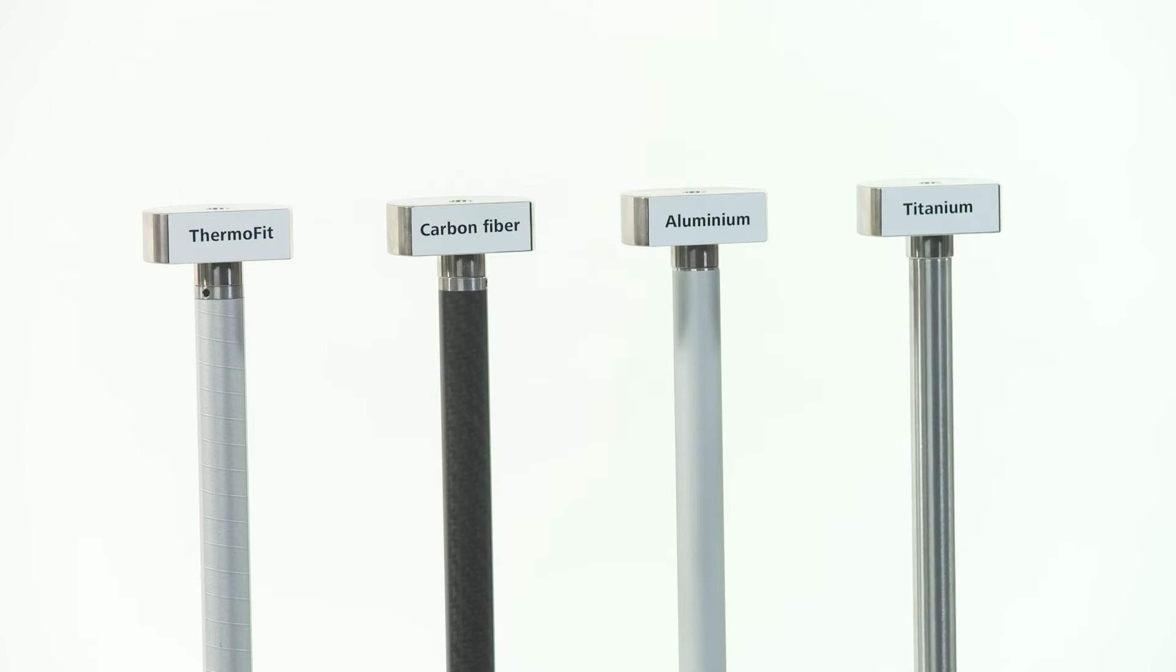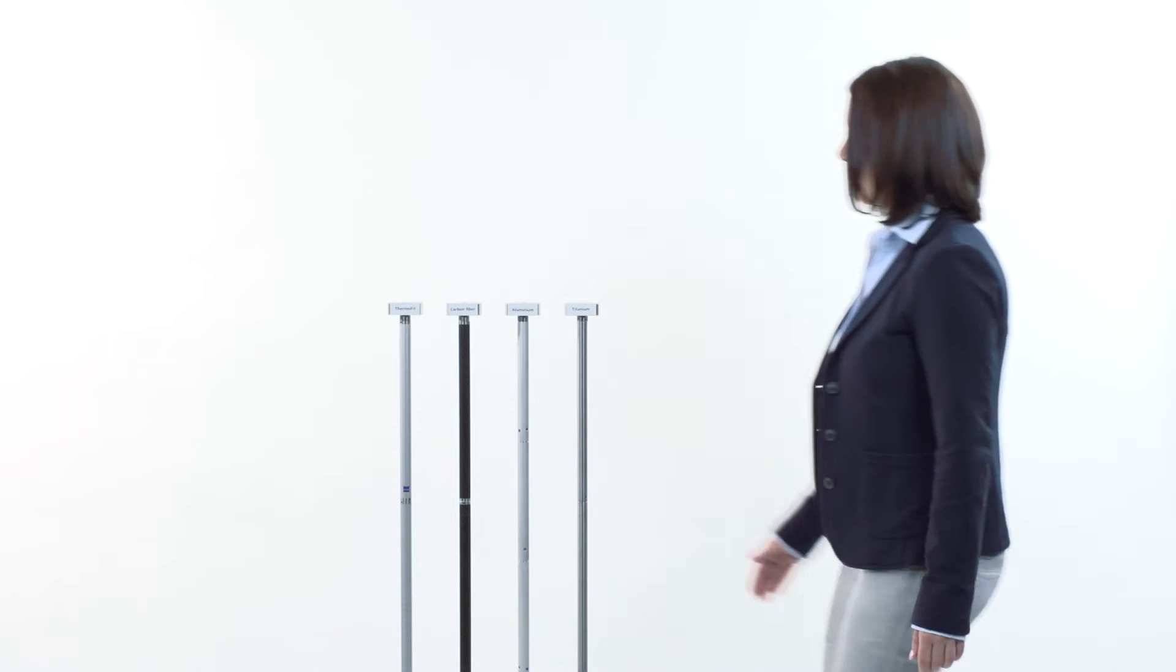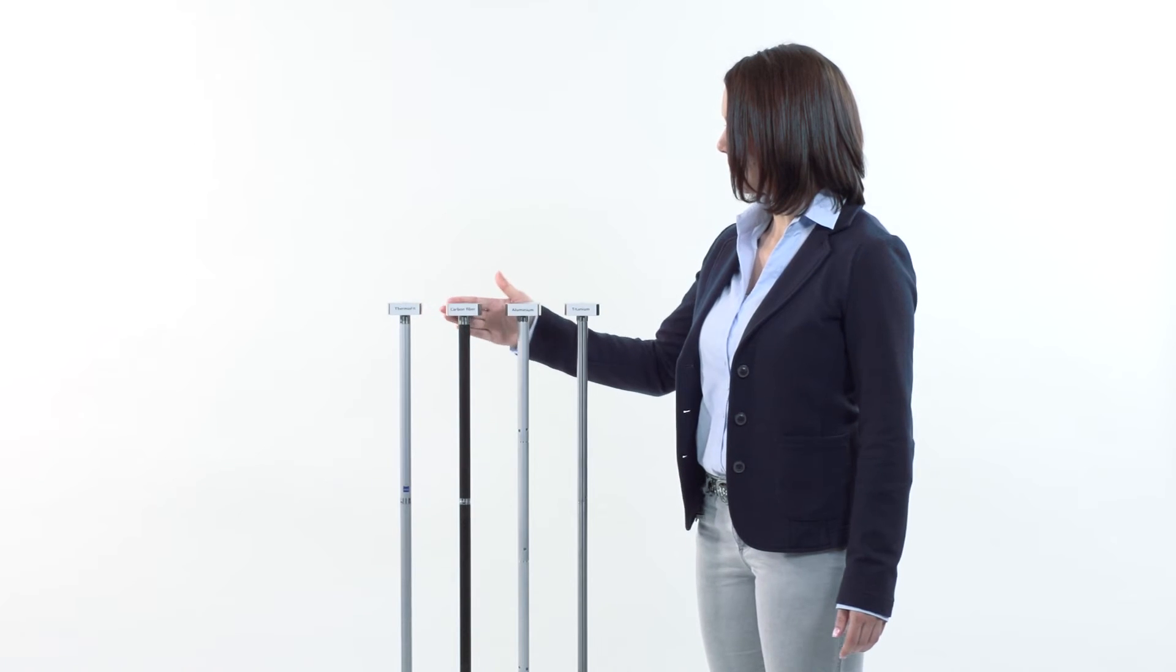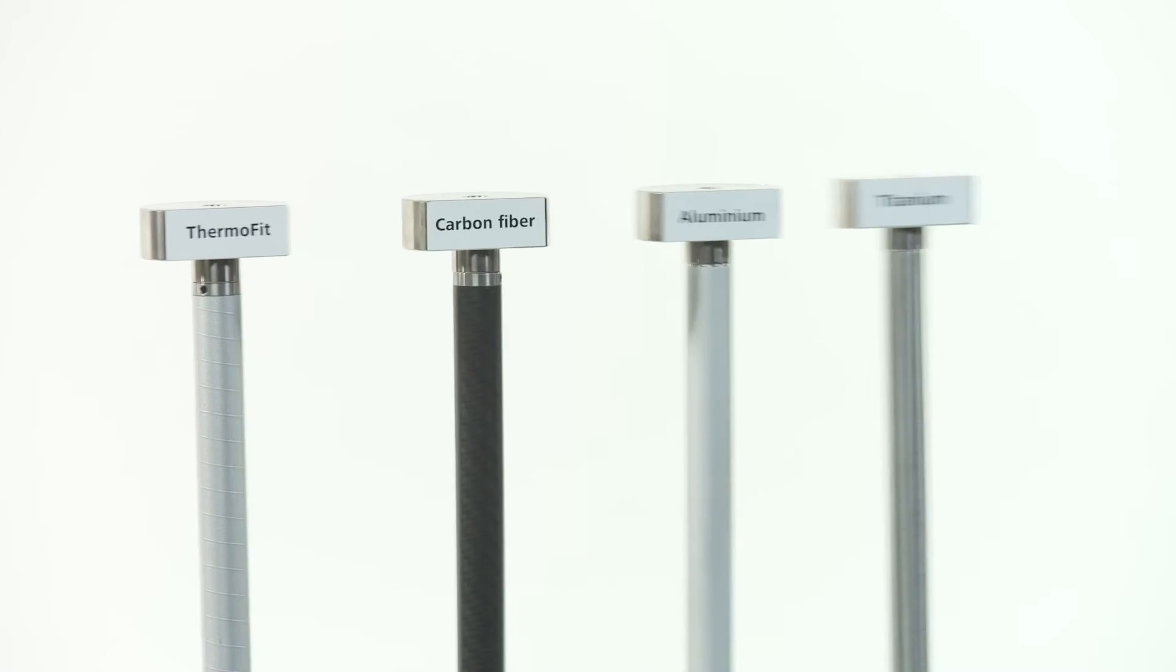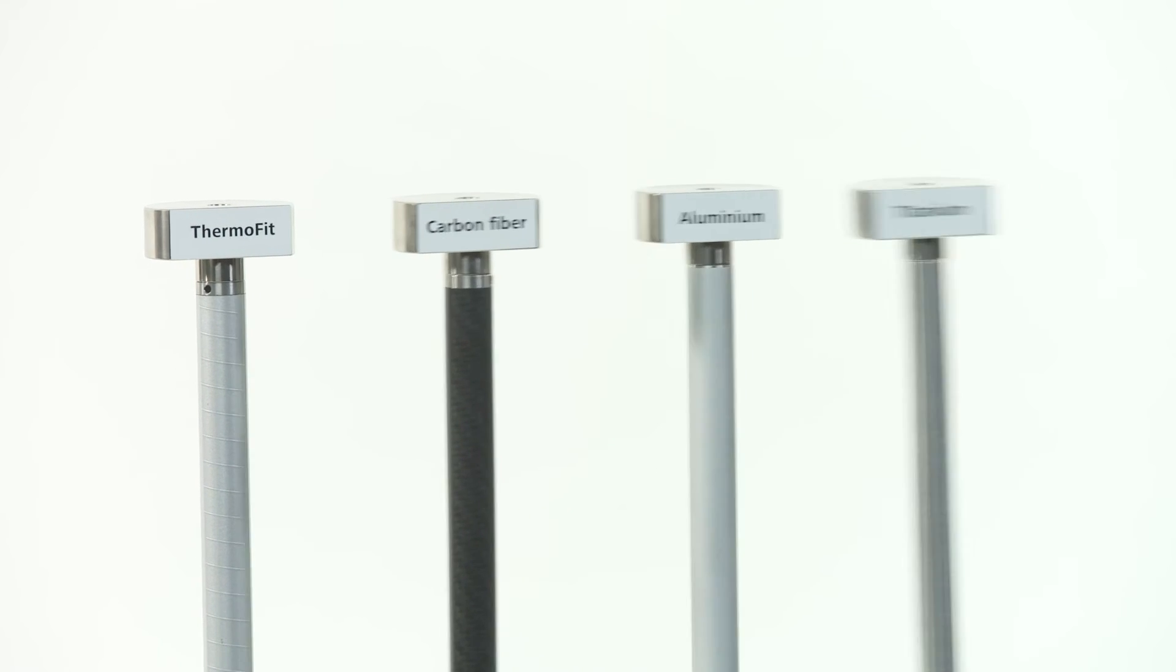Especially when you're measuring with high throughput where larger flexural forces come into play, it's important to have a high degree of rigidness. This follows the rule: the higher the scanning speed, the bigger the difference.